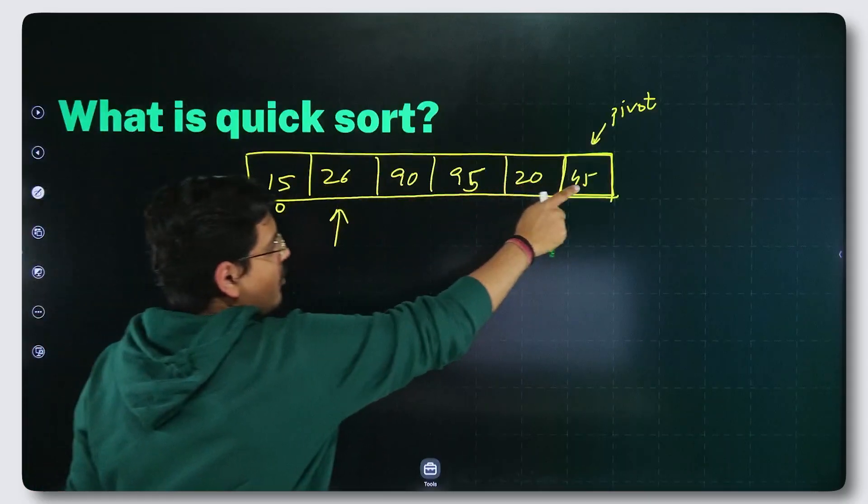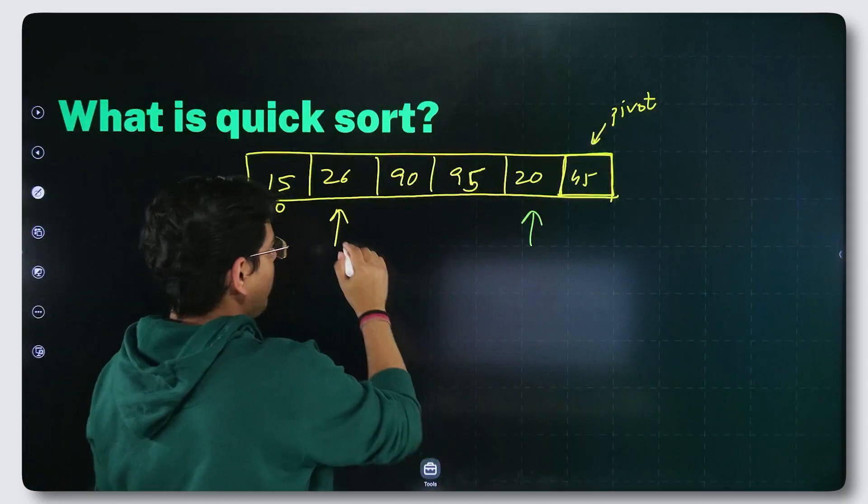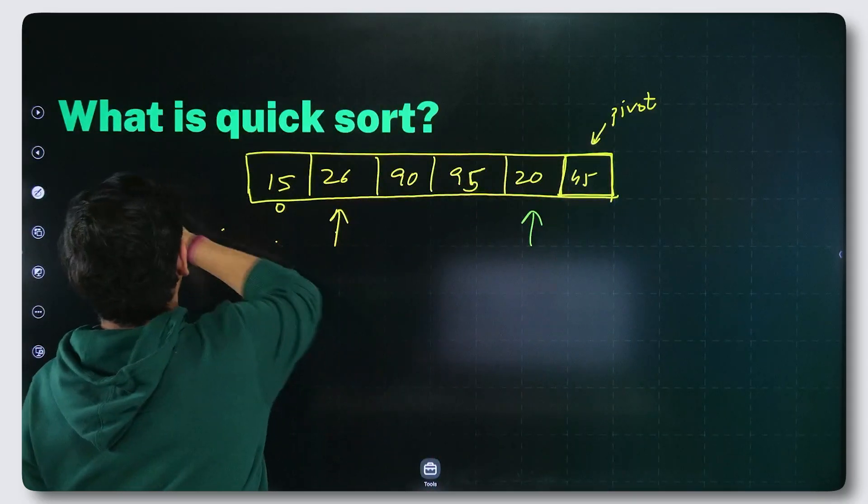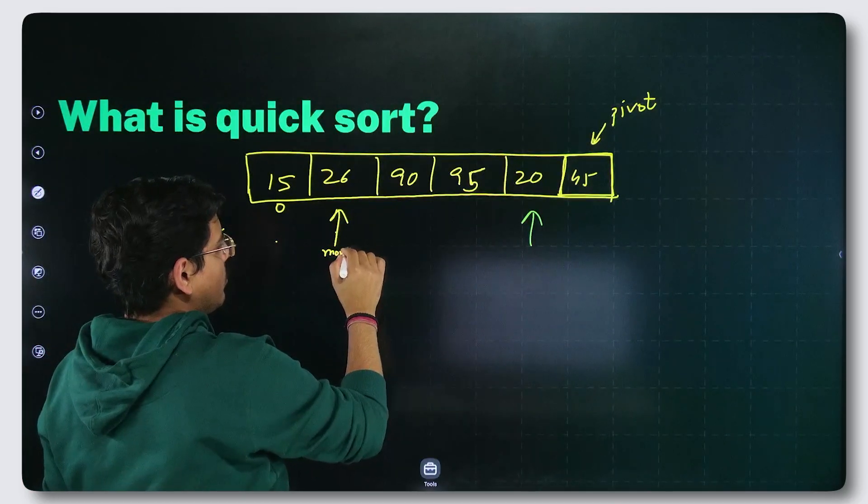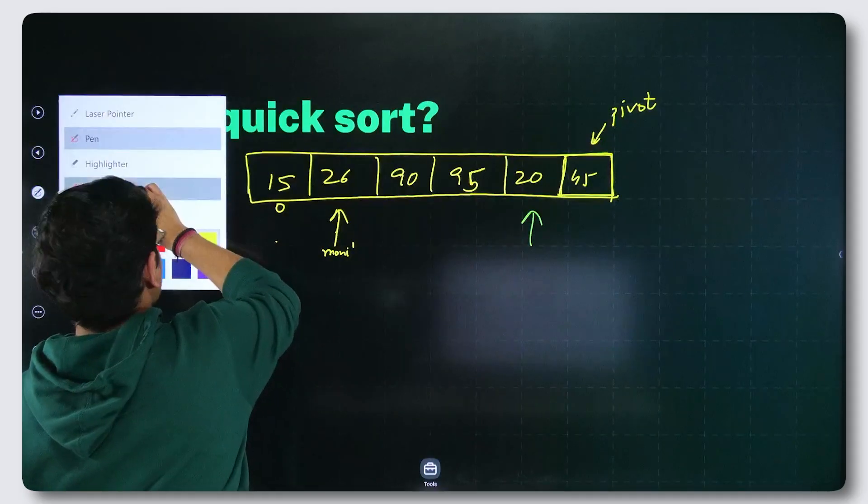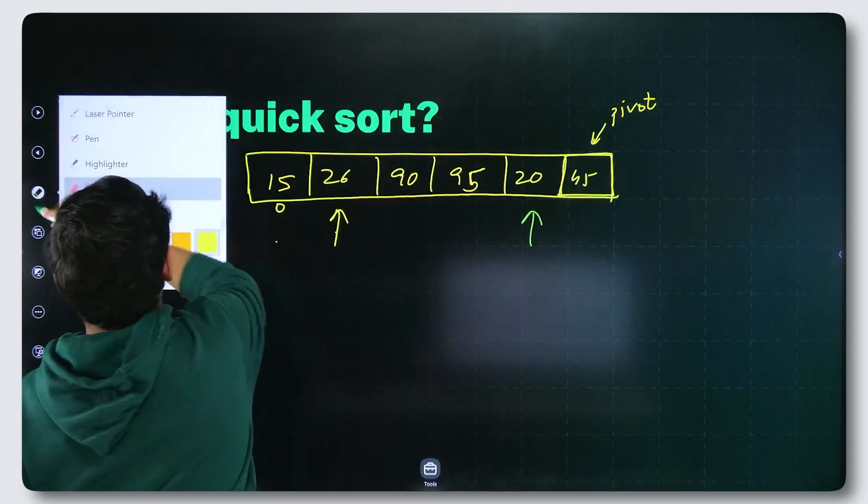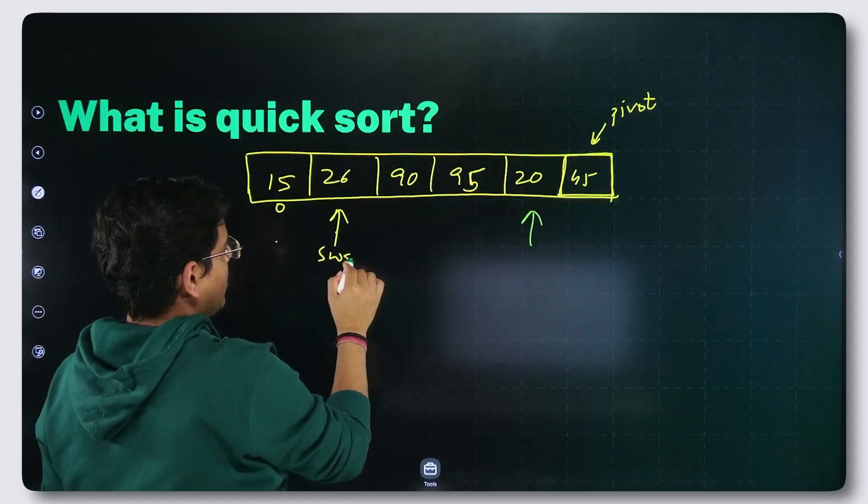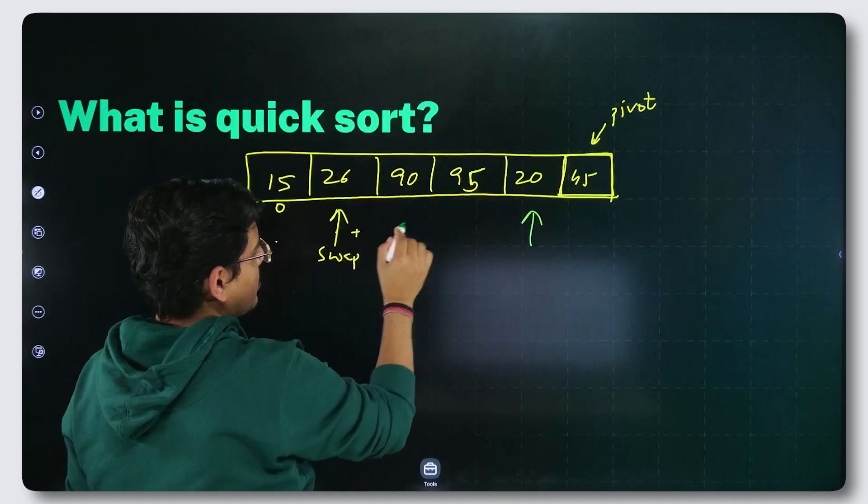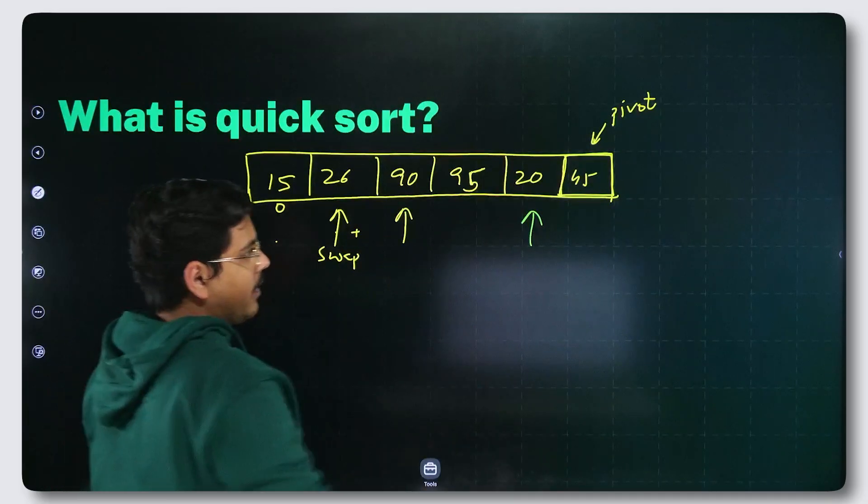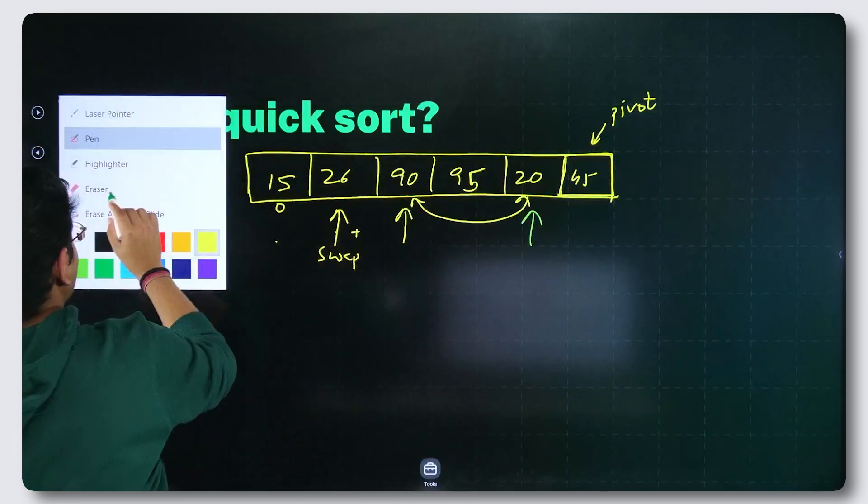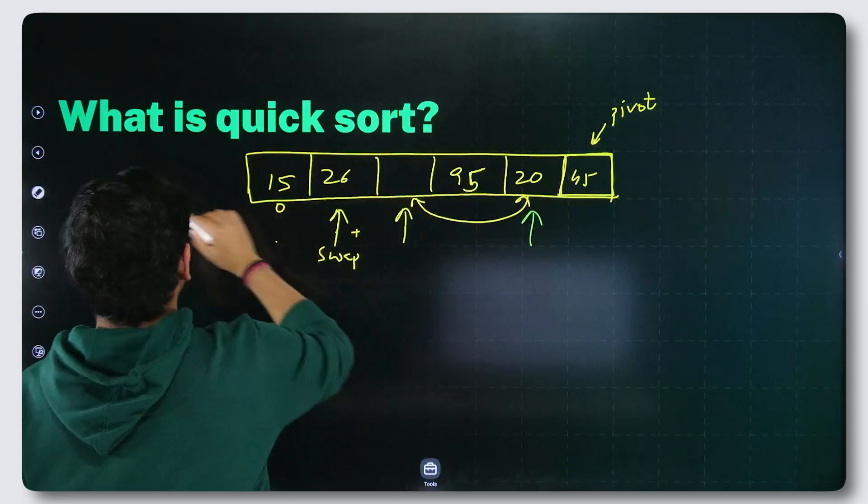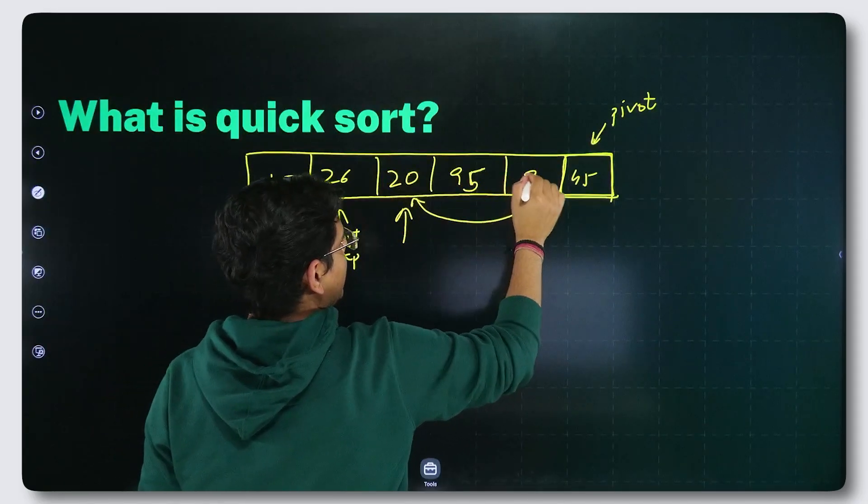It is smaller than 45. So what will happen? First of all, increment this pointer. Say that this is monitor pointer or swap pointer. Better to say it as swap pointer, because this is helping us in swapping. So first of all, I will increment this. This comes here. Then I swap both of them. So what do I get with this swapping? It comes here. 90 comes here.